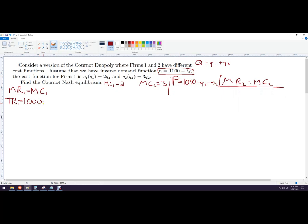our total revenue, multiplying a quantity on every part of this function here, quantity 1 minus quantity 1 squared minus quantity 1, quantity 2.